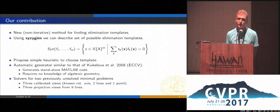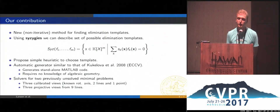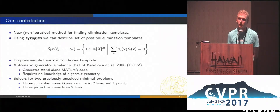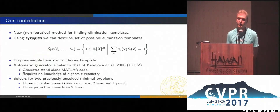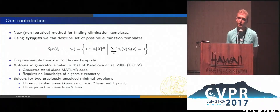Our contribution is a new, non-iterative method for finding these elimination templates. Using so-called syzygies, we can essentially describe a set of possible elimination templates for our problem. Syzygies are the polynomial relations between our equations and encode the ambiguity in representing polynomials with them. We propose a simple heuristic to choose a template from this set of possible templates. We have implemented this in an automatic generator similar to that of Kukelova et al., which generates stand-alone MATLAB code and requires no expert knowledge of algebraic geometry.